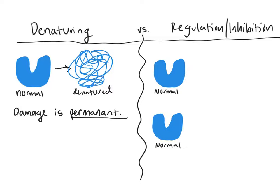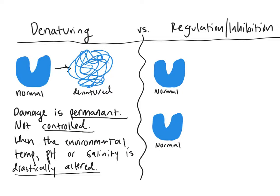So how do we denature a protein? We know that we can do three things, and it all has to do with changing an enzyme's environment. This is not controlled — it's usually not something that happens on purpose, but maybe something happens to an organism's environment, like you find yourself in a really cold situation or out in the heat. That's how temperature can affect an enzyme. We also have pH and salinity. Changing the environment — changing the pH, salinity, and temperature — is going to possibly permanently denature our enzyme. When an enzyme gets too far outside of its optimal range where it works best, it can be drastically altered and will never function again, causing a loss of enzyme function — meaning the enzyme can't bind to its substrate and can't make product.